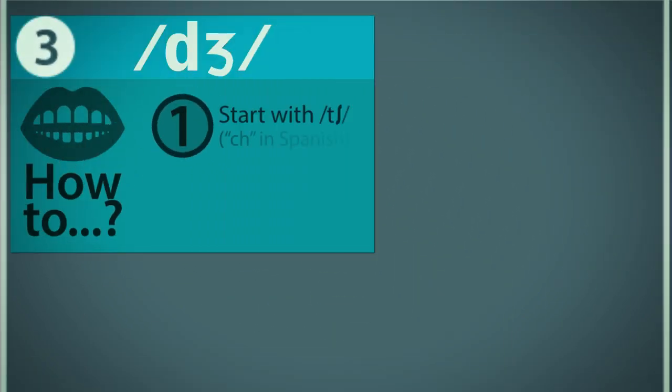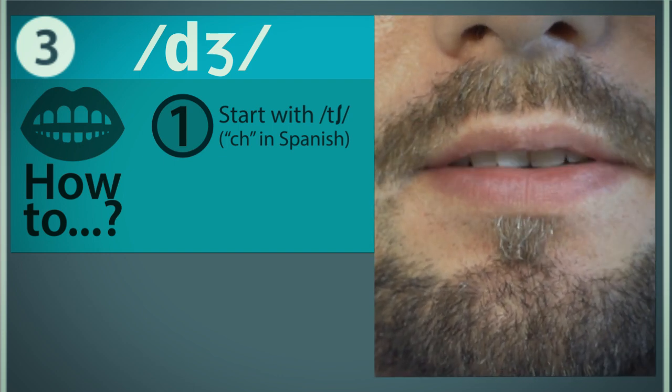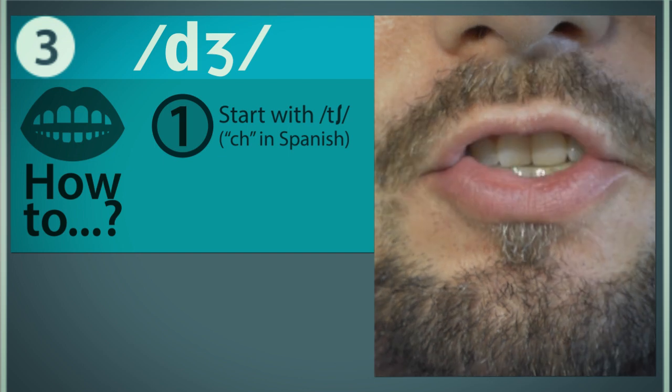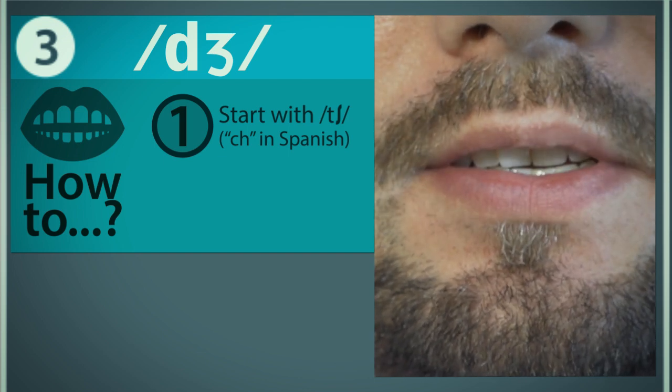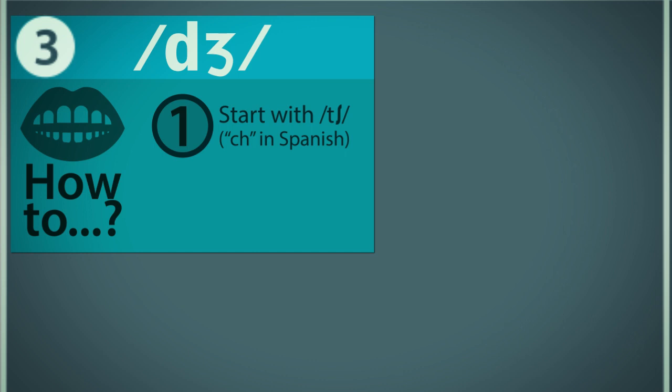The J phoneme starts first with the CH, which is often written with the letters CH, for example, in the Spanish word chico. Once we add voice to the CH sound, we get the phoneme.